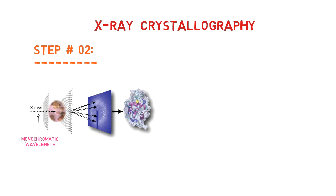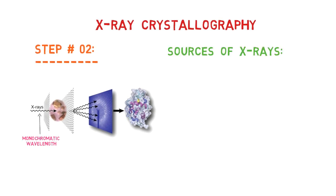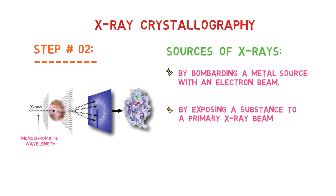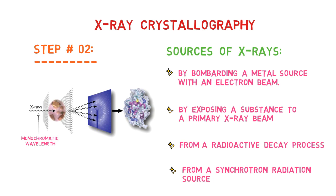X-rays can be generated in four different ways: by bombarding a metal source with a beam of high-energy electrons, by exposing a substance to a primary beam of X-rays to create a secondary beam of X-ray fluorescence, from a radioactive decay process that generates X-rays, and from a synchrotron radiation source.